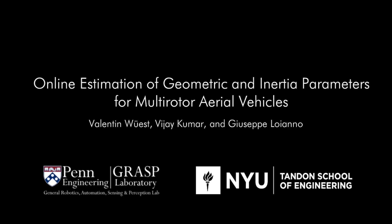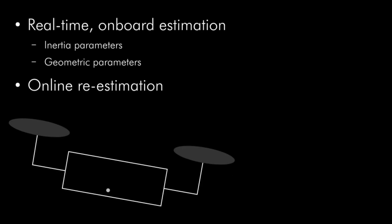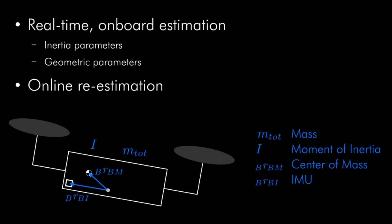We present a framework for multirotors capable of estimating inertia and geometric parameters online. Specifically, we are able to estimate the inertia parameters: mass, moment of inertia, and position of the center of mass, and the geometric parameters: position of an IMU and position of a pose sensor.